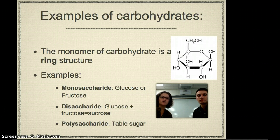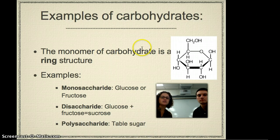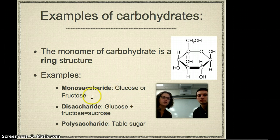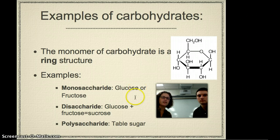So many of the macromolecules have building blocks and then bigger structures. The monomer, or the smallest unit of carbohydrates, is this ring structure. The monomers of carbohydrates are called monosaccharides, meaning single sugars. The two most famous examples are glucose and fructose. Up here we have an example of glucose — that ringed carbon structure. If you glue two of these monomers together, you get a disaccharide, or sucrose, which is table sugar.